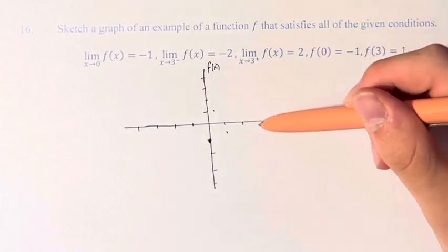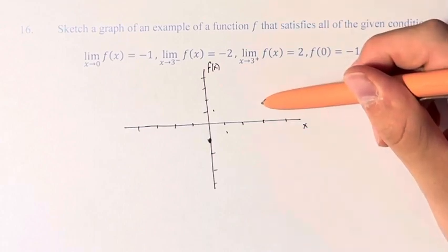The value when x is equal to 3, 1, 2, 3, is 1, so it has a y-value of 1.